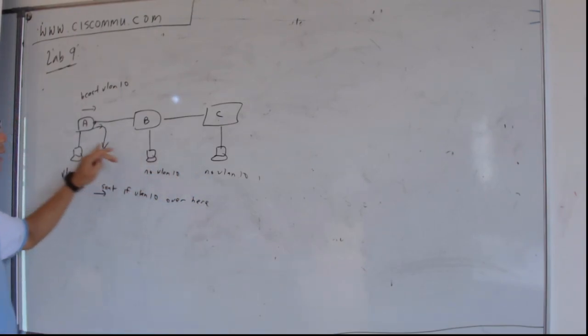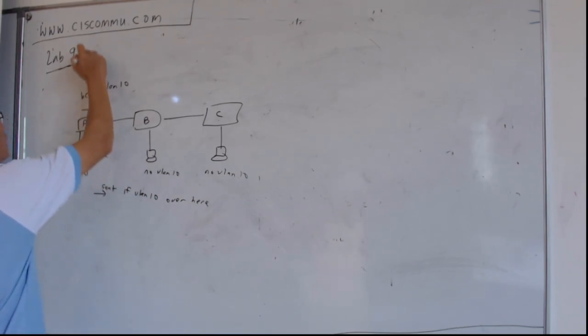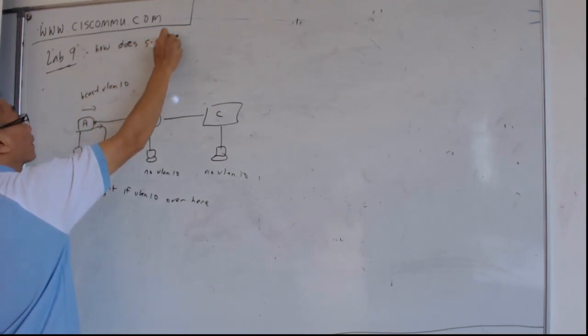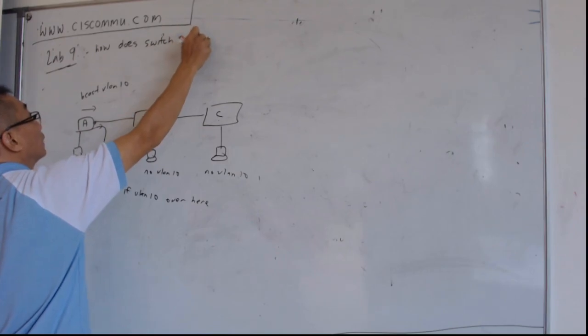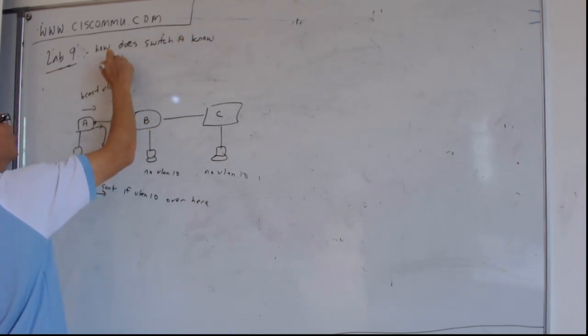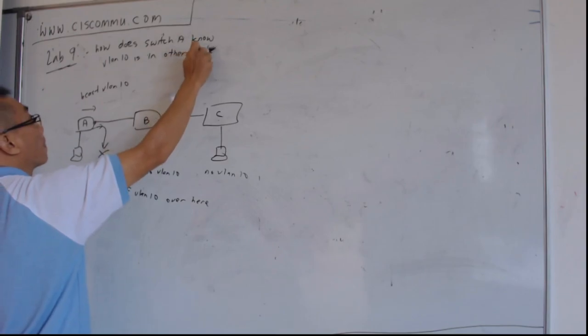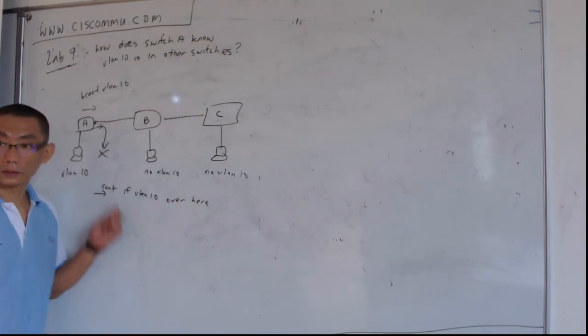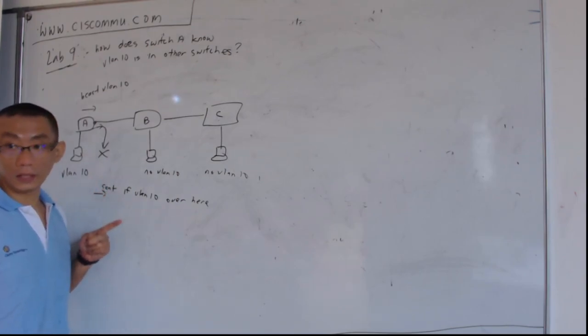If there's a VLAN 10 here, then it will be sent. But the question is, how does switch A know that VLAN 10 is in other switches as well? How does it know?